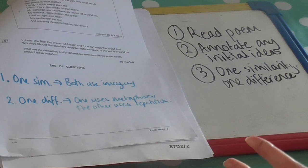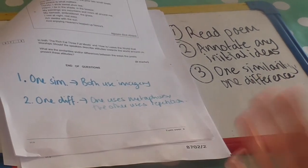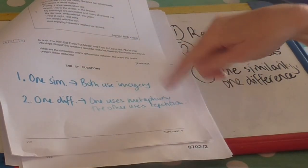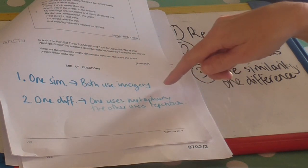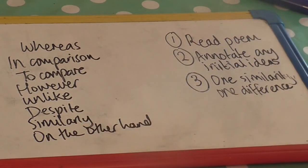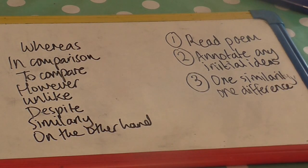You need to be choosing the quotes that match these techniques. And then, straight away, start writing about it. This is the sort of language you want to be using. I'm looking for things like, whereas, in comparison, to compare, however, unlike, despite, similarly, on the other hand. Using those words as much as you can, compare the two poems. For me, it's always going to be through techniques.